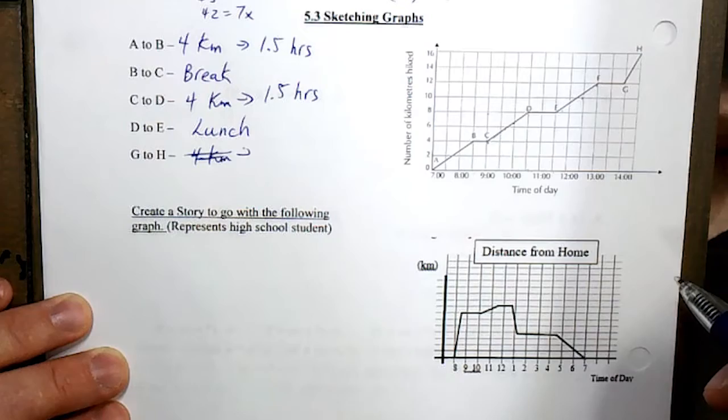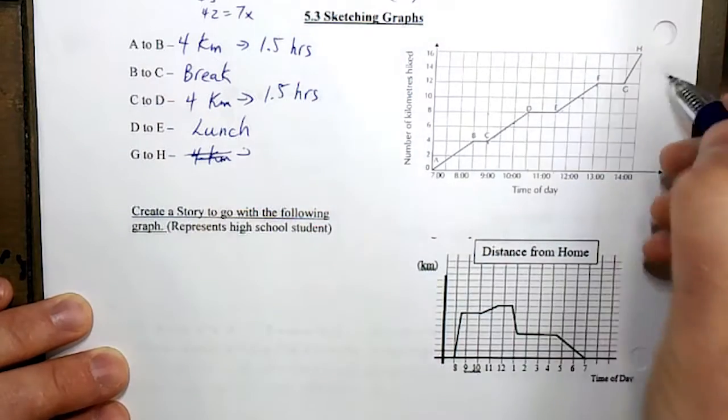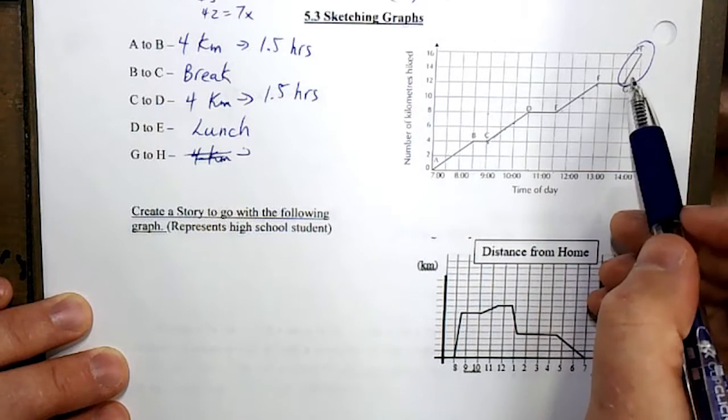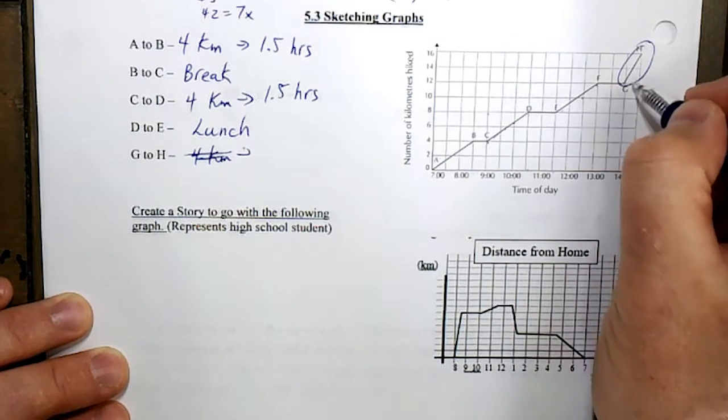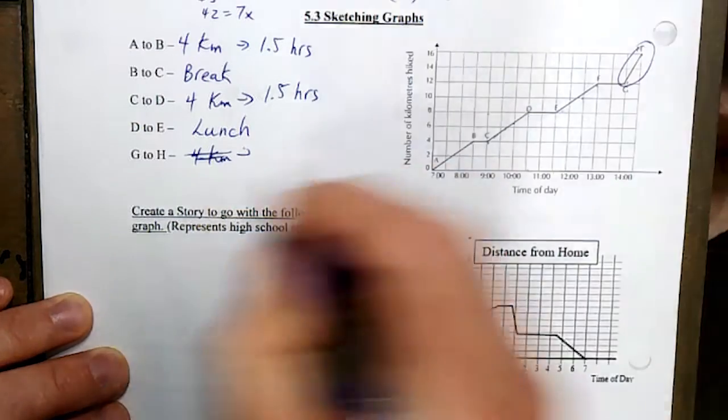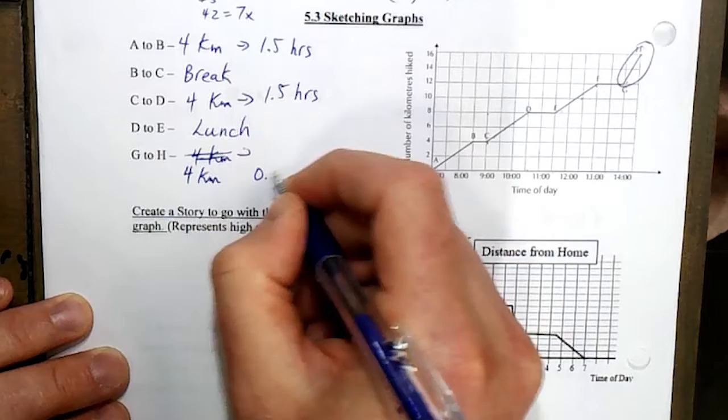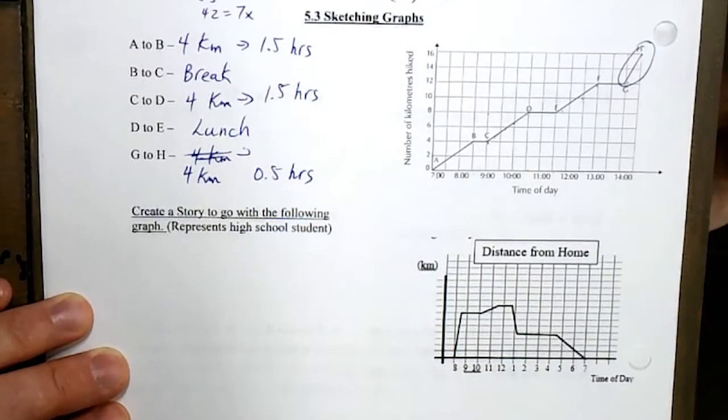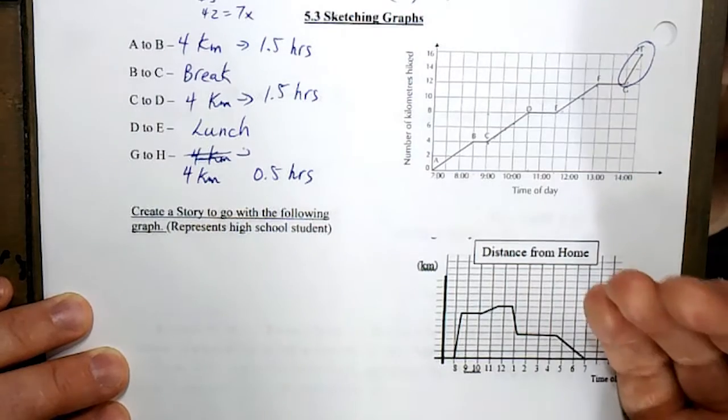Now the key one, G to H is this one here. Right away we can see that it's steeper, and if we look at the numbers we're going 4 kilometers in half an hour. So we can see that yes, we must be going much faster.